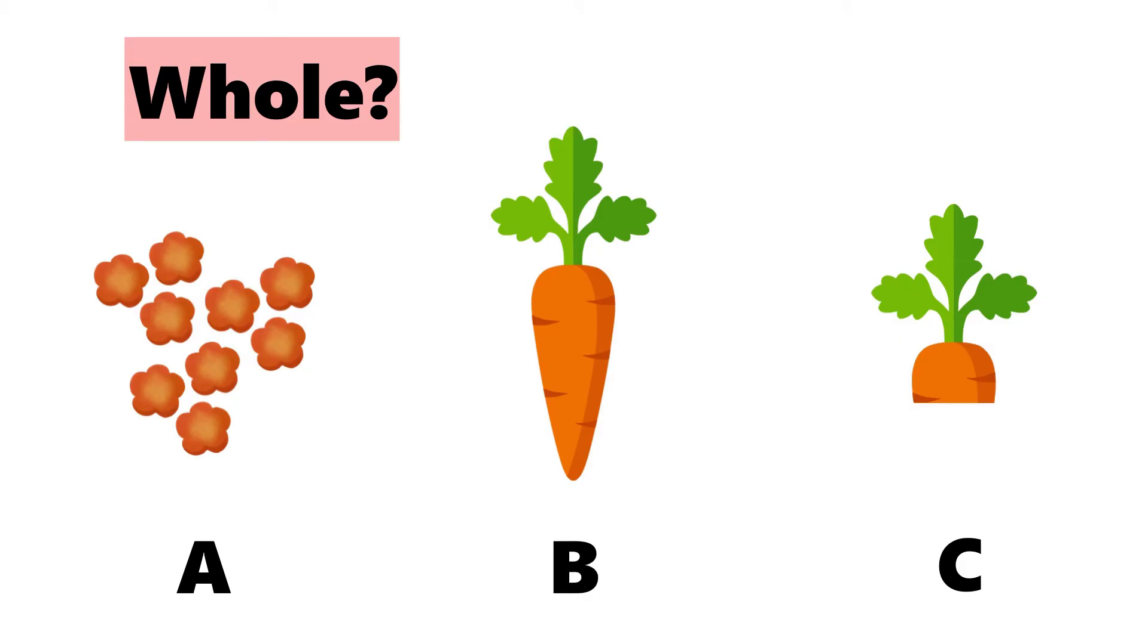Which is a whole? B is the whole. It is the full carrot. A and C are only parts of the carrot, so they are not the whole.